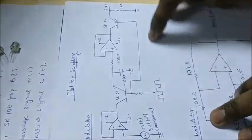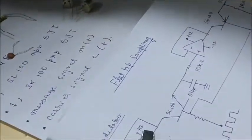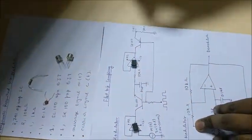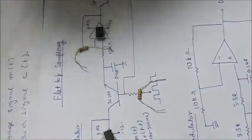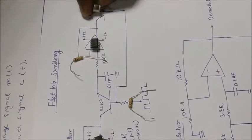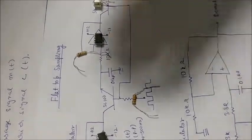Now we will see the circuit diagram. This is a modulation circuit, and there are two 741 ICs placed in the circuit. We have 10kΩ resistors placed here. After that we place the SK100 PNP transistor and SL100 NPN transistor. Then there is a 1kΩ resistor and the 0.1 μF capacitor. The master signal is fed from the function generator here, and the carrier signal is fed here.